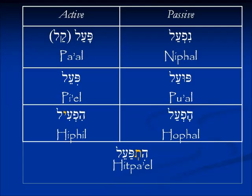Shalom. Today we're continuing our verbs workshop. I hope that you are comfortable now with all the suffixes which create the perfect tense, which we would consider to be the past completed action tense. Today we're going to look at the imperfect tense, and in our Binyan chart there are just a few little things highlighted that can help give us a clue when we're looking at the imperfect verbs about the Binyan.